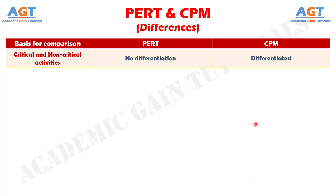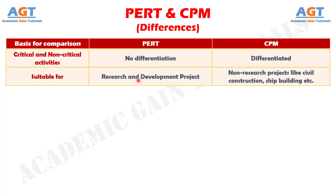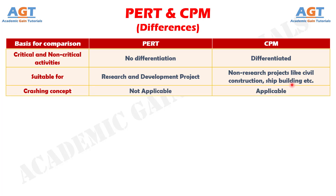Number 11: There is a demarcation between critical and non-critical activities in CPM, which is not the case in PERT. Number 12: PERT is best for research and development projects, but CPM is for non-research projects like construction projects. And difference number 13: Crashing is a compression technique applied to CPM to shorten the project duration along with the least additional cost, but the crashing concept is not applicable to PERT.